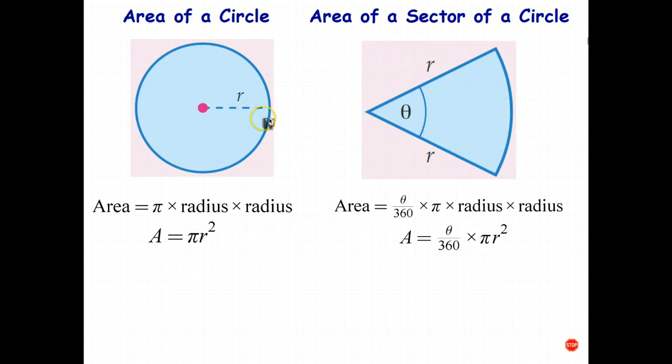The first one is area of a circle, and the formula that I like to use is area equals pi times radius times radius. I actually write out all of the words. The more standard way of writing it: instead of writing radius, we write the letter r, and radius times radius, or r times r, is r squared. So that's the standard formula.